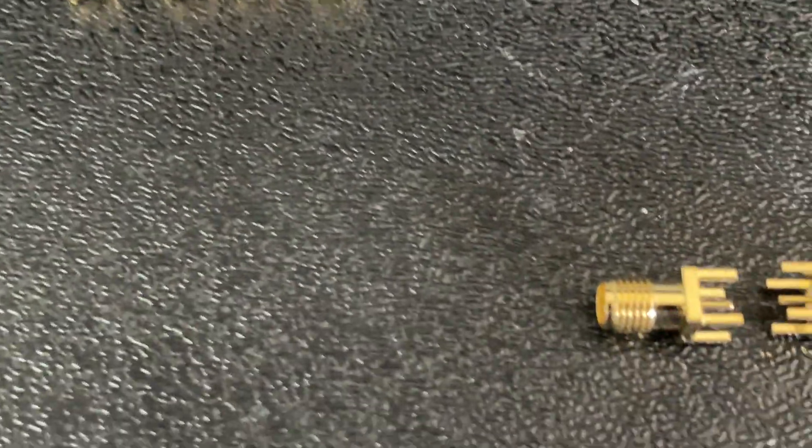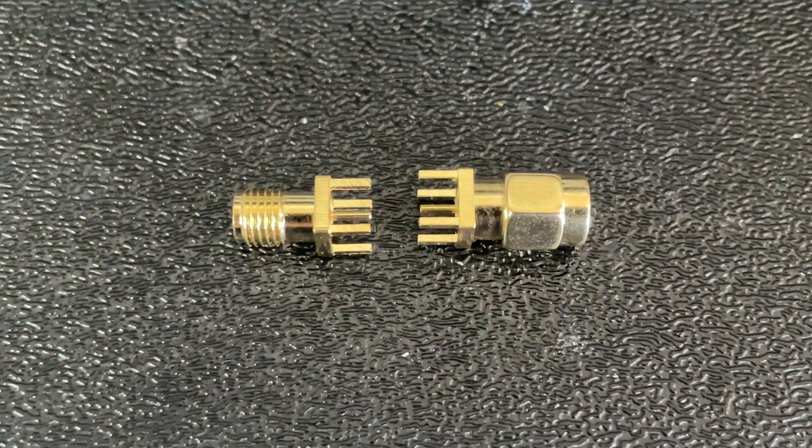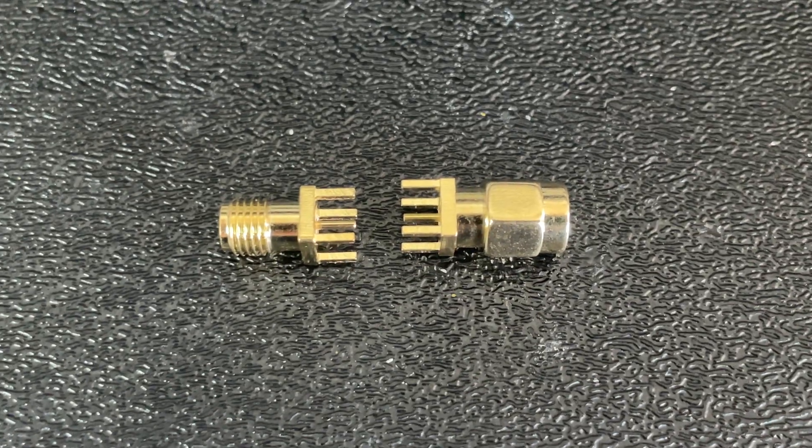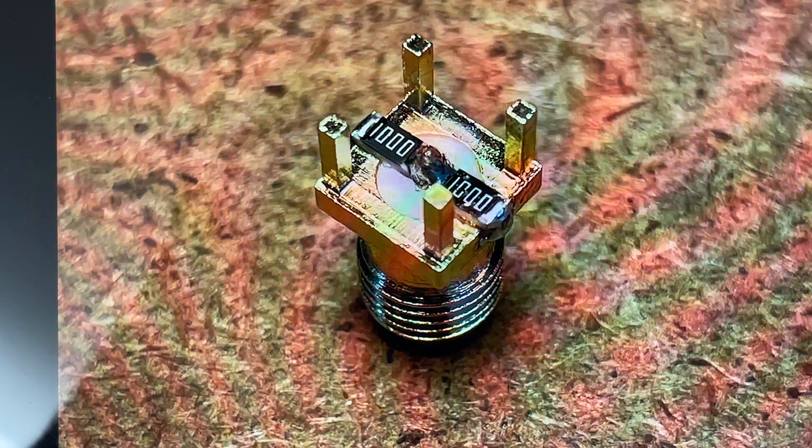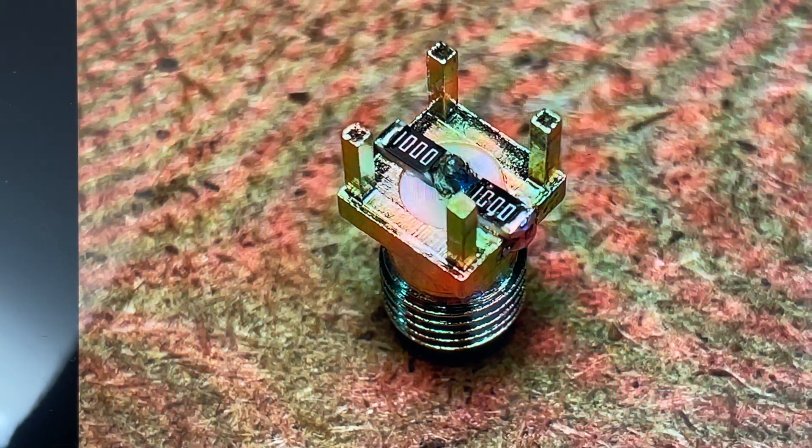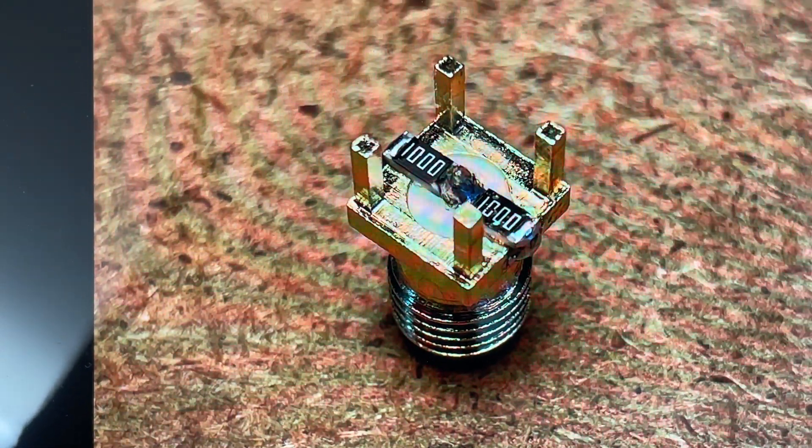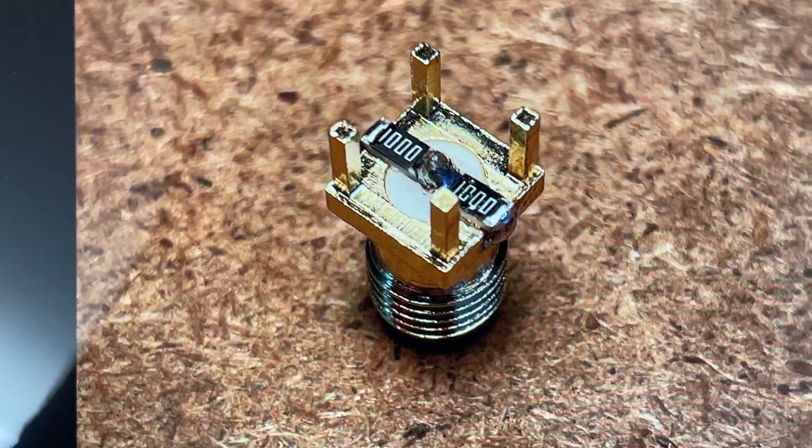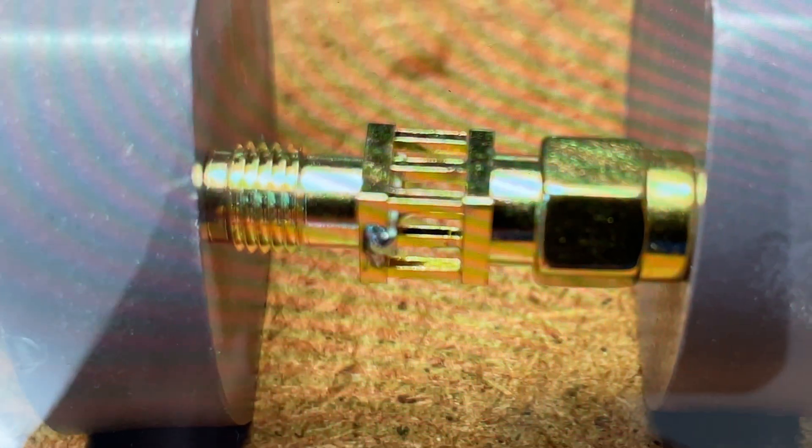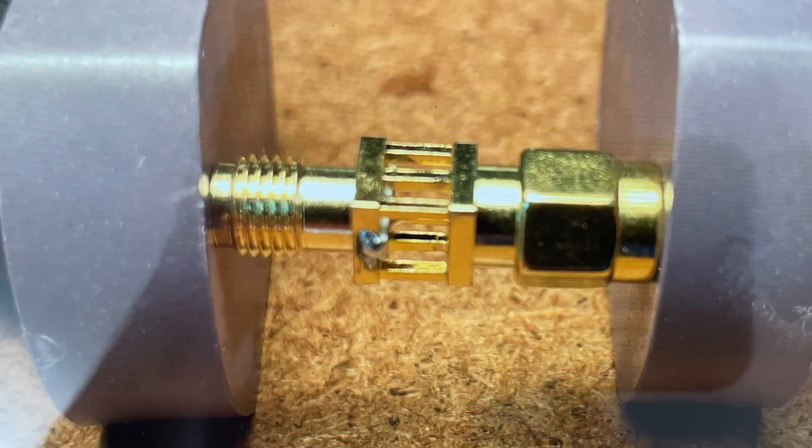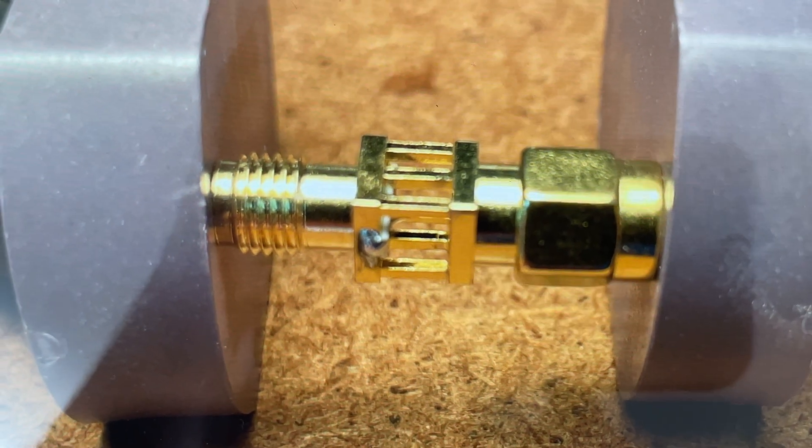I'm using these SMA connectors, one female and one male. The resistors are simply soldered in, as you see now. And the mounting posts are left intact. Let's take another look. There's a picture of how we put it together and soldered a couple of them.